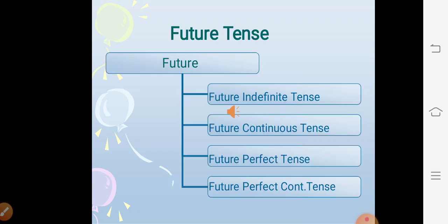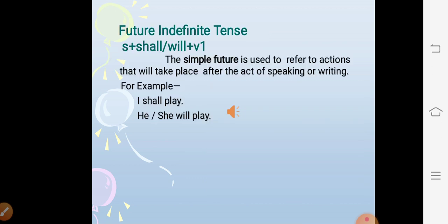Now future tense. Future indefinite tense, future continuous tense, future perfect tense, and future perfect continuous tense. Future indefinite tense: the structure is subject + shall/will + V1. The simple future tense is used to refer to actions that will take place after the act of speaking or writing. For example: I shall play, he or she will play.